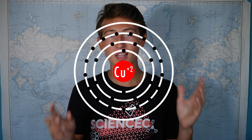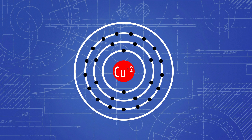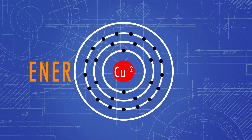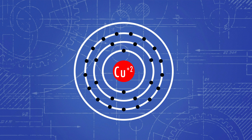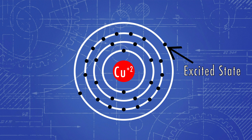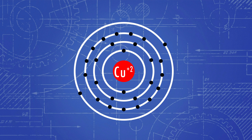So we have our nucleus, and then around it we have our electrons at their different orbitals. Now all these electrons are at their ground orbitals right now, or their lowest energy orbit possible. However, if we add some energy to that ion in the form of heat, some of those electrons will go into a higher orbit, from ground state into what's called an excited state. However, those electrons won't stay in that excited state forever, and will drop back down to their ground state.